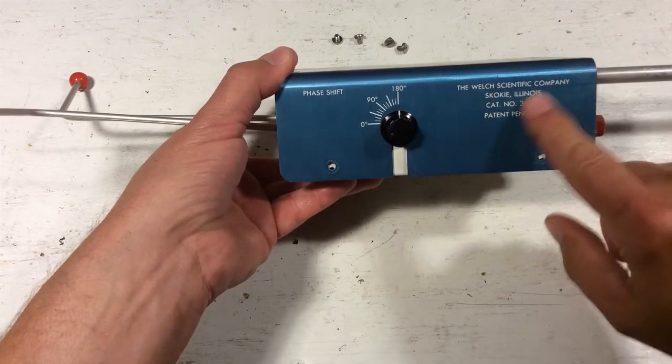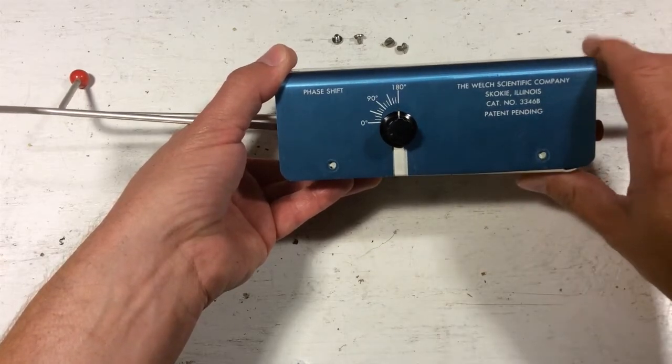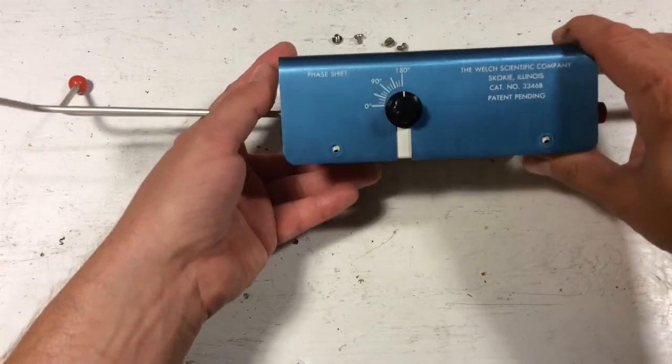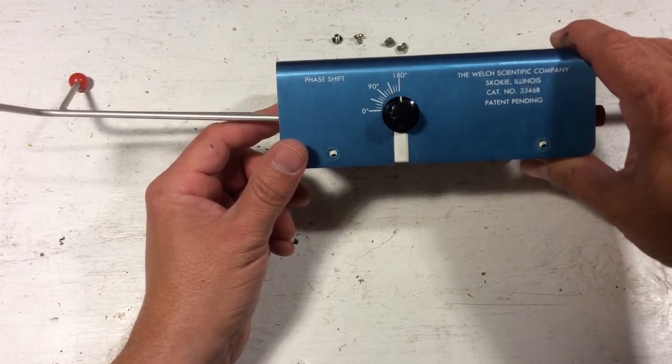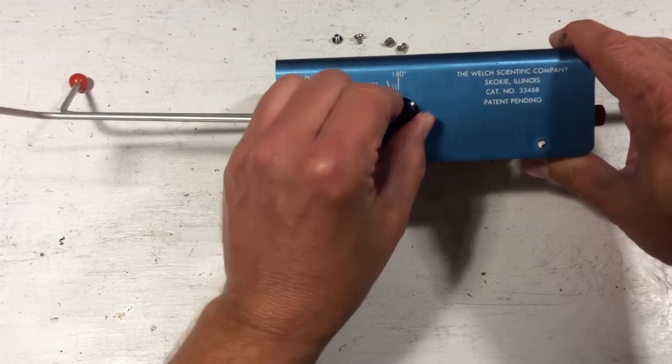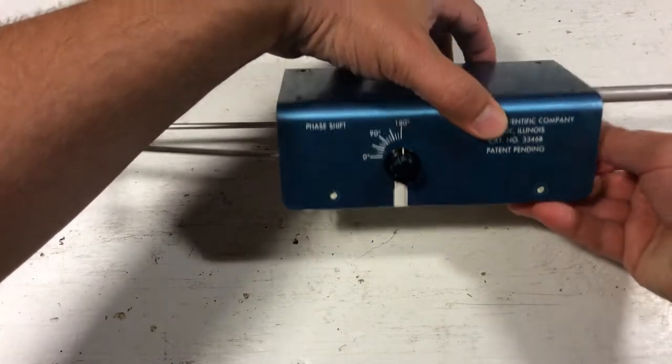It comes from the Welch Scientific Company and I think they're still in business. I found some things on the web but I couldn't find this device. This is old, probably from the 70s or 80s. It must be some kind of scientific training device because I think that's what they make, but I can't figure out what it does.